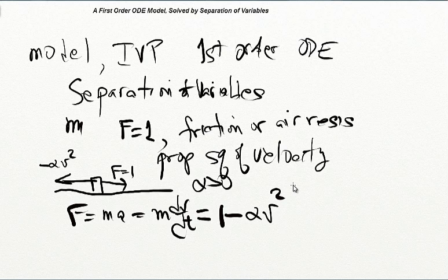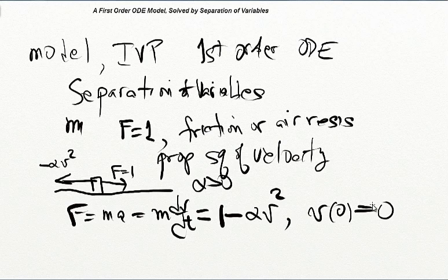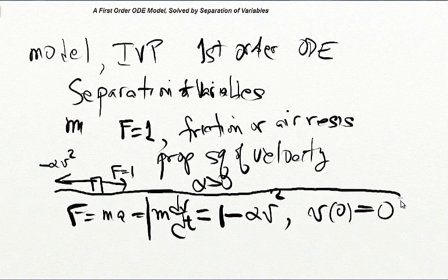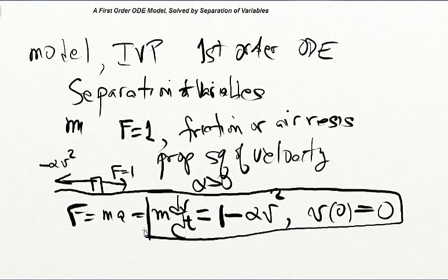We'll assume that it starts at rest at time t equals zero, so the initial data is v(0) equals zero. Here's our IVP obtained by modeling this physical problem: a first-order ordinary differential equation and a piece of initial data. Now we want to solve that IVP by the method of separation of variables.